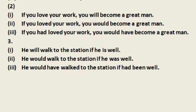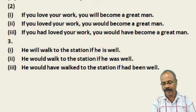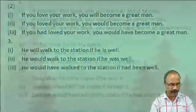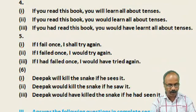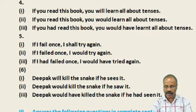Number 2: He will walk to the station if he is well. Second form: He would walk to the station if he was well. Third form: He would have walked to the station if he had been well. Number 3: If you read this book, you will learn all about the tenses. Second form: If you read this book, you would learn about the tenses. Third form: If you had read this book, you would have learnt all about the tenses.